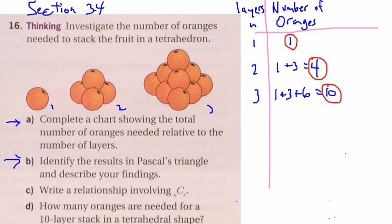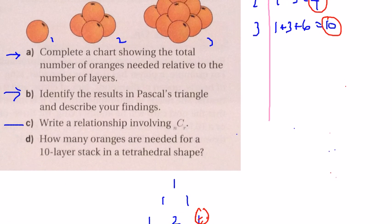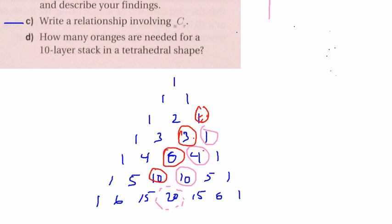Part C is a little trickier. It says write a relationship involving n choose r. It's much easier when we can just look at the patterns in Pascal's triangle. The very first one, when n was one, was down here in row three. So it would have been 3 choose 3, which equals one orange.